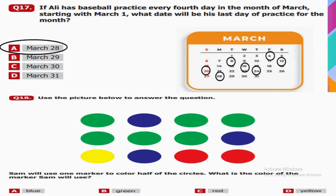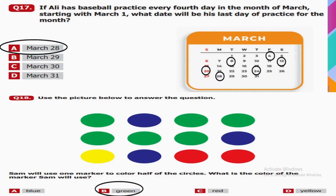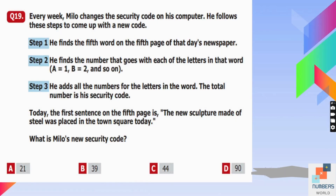Question number eighteen: Sam will use one marker to color half of the circles. What color will Sam use? There are 12 circles in total, and 6 of them are green. Sam would choose the green marker to color half the circles. B is the answer.